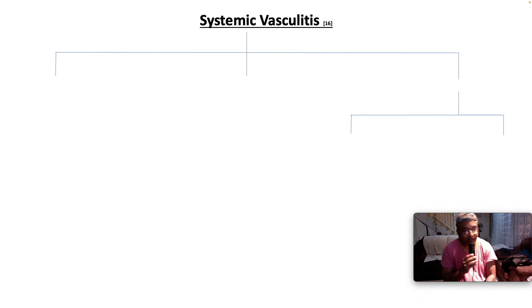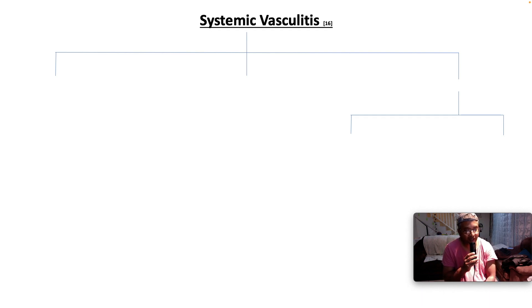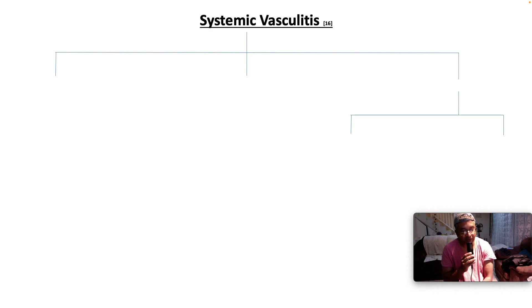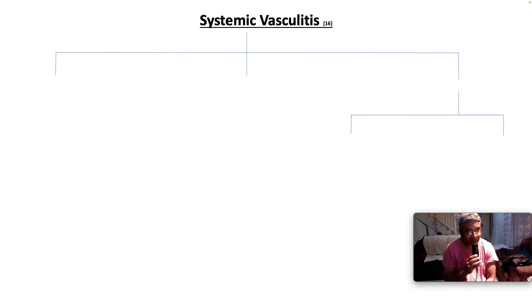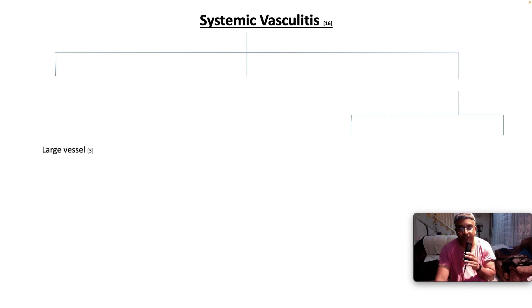The clinical manifestations of systemic vasculitis are protean. It may be confined to a single organ or affect a whole range of different organ systems. Systemic vasculitis should always be considered when particular physical findings are present or multiple systems are involved.